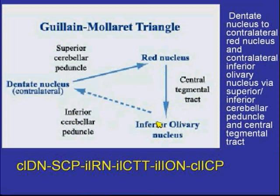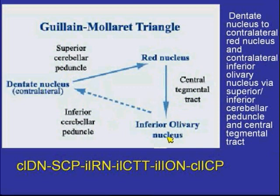An injury to the red nucleus ipsilaterally may cause hypertrophic olivary degeneration of the inferior olive on that same side. An injury to the dentate nucleus will affect the contralateral olive, which is what we are seeing in the previous case.